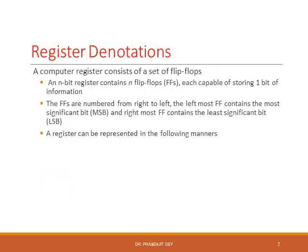A computer register consists of a set of flip-flops. An N-bit register contains N flip-flops, and each flip-flop is capable of storing one bit of information. Thus, if we have N flip-flops, we can accommodate N bits of information. Flip-flops are numbered from right to left. The leftmost flip-flop contains the most significant or most weighted bit, called the MSB. The rightmost flip-flop contains the least significant or least weighted bit, referred to as the LSB.